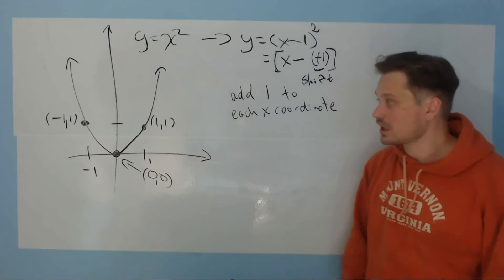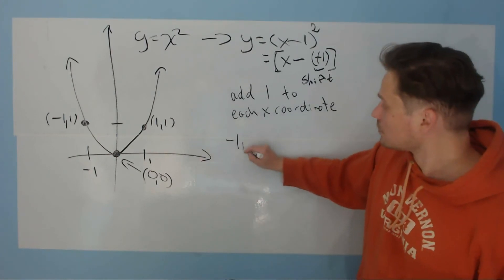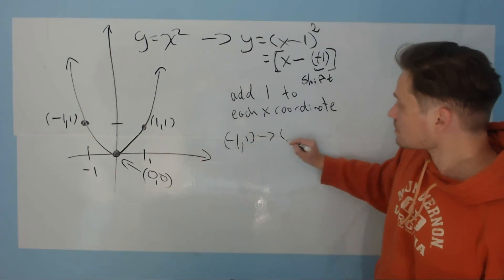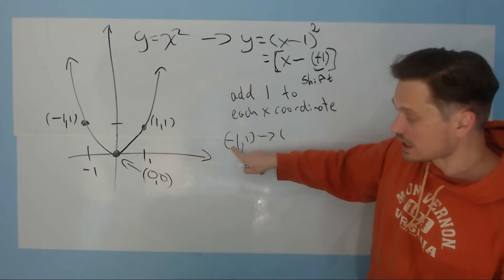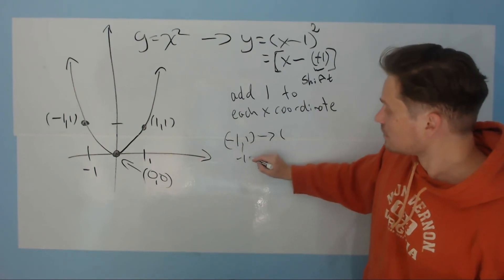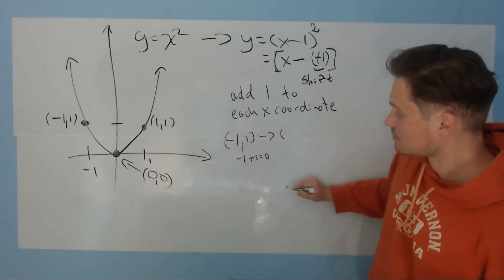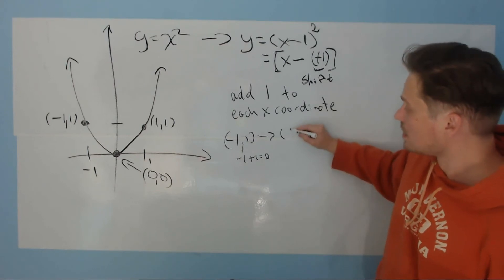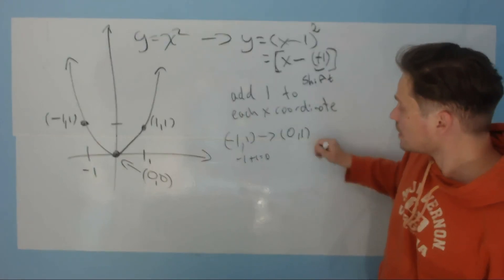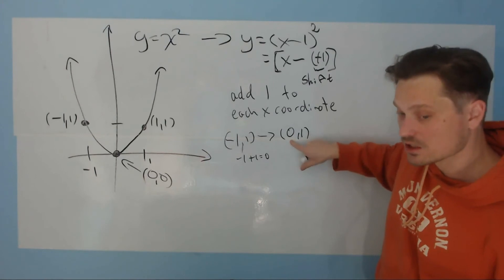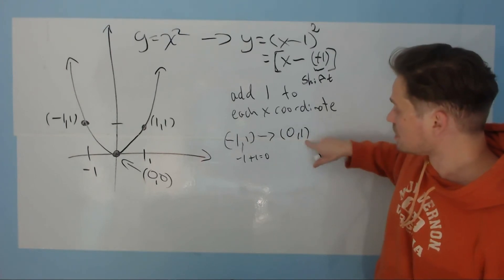Once that is in place, you take your points. Take negative 1, 1, and you transform it. You're going to add 1 to negative 1. So negative 1 plus 1 gives 0. So it looks like this. The new point will be 0, 1. Notice that the x-coordinate is clearly changed, but the y-coordinate is not changed. It's the 1.